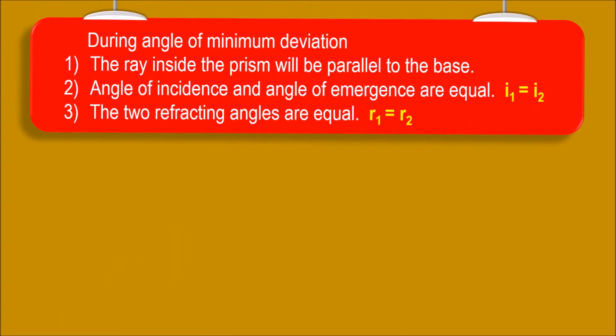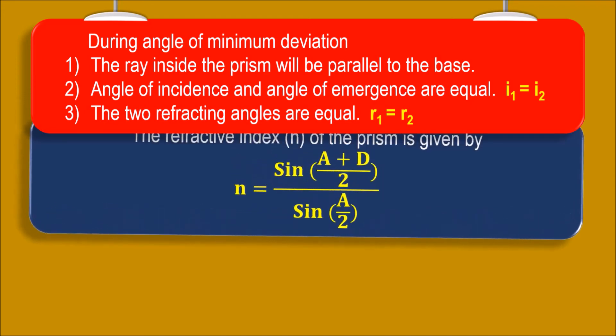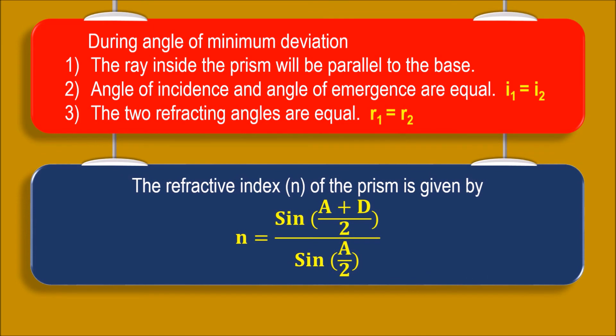During angle of minimum deviation, the ray inside the prism will be parallel to the base. Angle of incidence and angle of emergence are equal, that is I1 equal to I2. The two refracting angles are also equal, that is R1 is equal to R2. The refractive index of the prism is given by N equals sin of (A plus D) by 2, divided by sin A by 2.